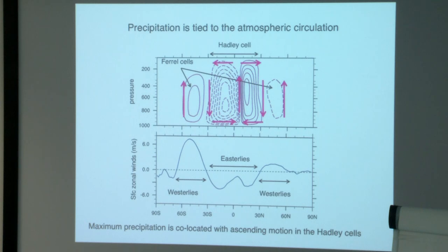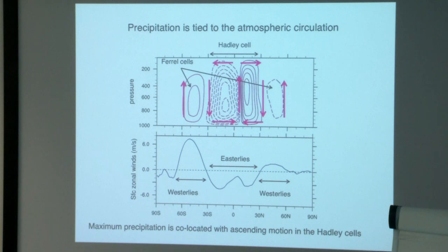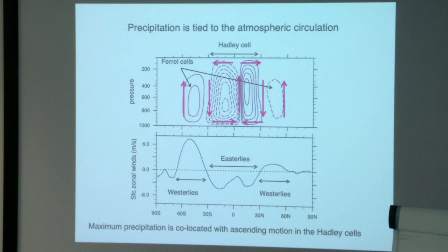The Hadley circulation shapes the zonal distribution of precipitation in fundamental ways: where its ascending branch is located, the strength of this overturning, and where the descending branches are. We would really like to have a closed theory for all these features of the Hadley cell in terms of planetary parameters—the depth of the troposphere, vertical stability, the pole-to-equator temperature gradient, the rotation of the planet, and the radius of the planet. Yet, as emerged from Jeff's discussion yesterday, that theory has not emerged yet, which also makes the interpretation of expected changes with warming more difficult.